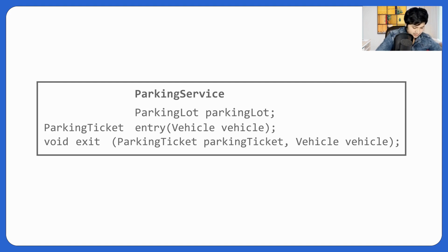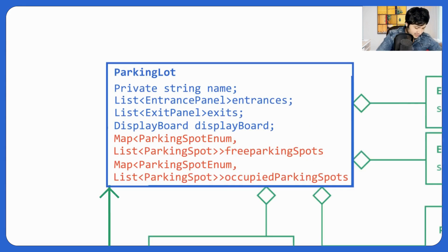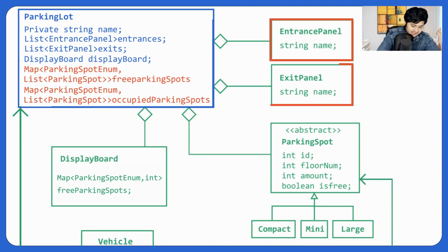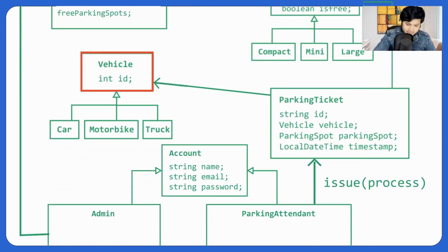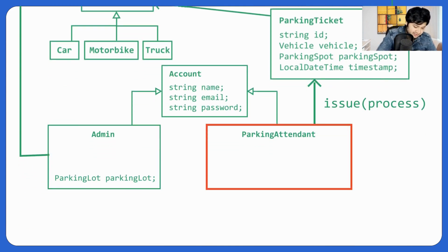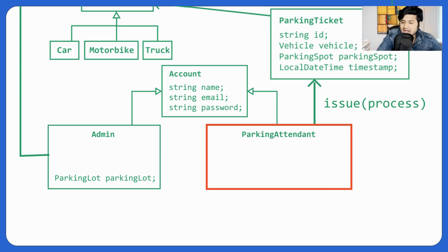Let's do a recap. We had a parking lot with name, entrance panels, exit panels, display board, and all parking spots — with composition relationships throughout. We looked at enumerations vs. abstract classes and went with abstract classes. We then covered parking ticket, vehicle, admin, and parking attendant. A parking attendant has an instance of the parking service, since they issue parking tickets, accept payment, and allow exit.